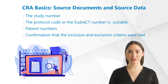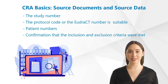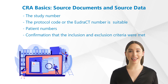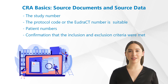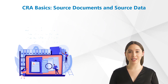Confirmation that the inclusion and exclusion criteria were met. The inclusion criteria should not only be available as confirmation, but should also be traceable using fixed data such as age, sex, and underlying disease, whereas the exclusion criteria should not be available in the medical record and therefore confirmation of the absence of the exclusion criteria is sufficient.